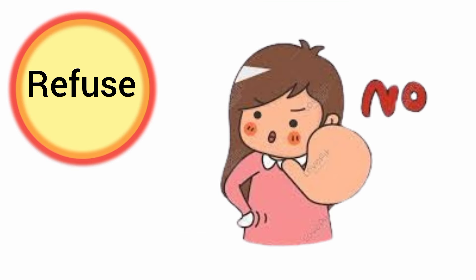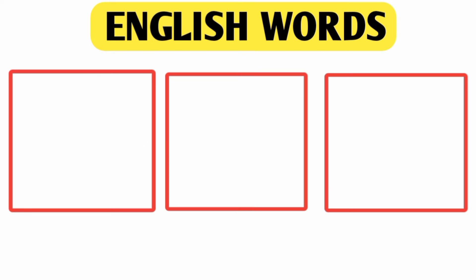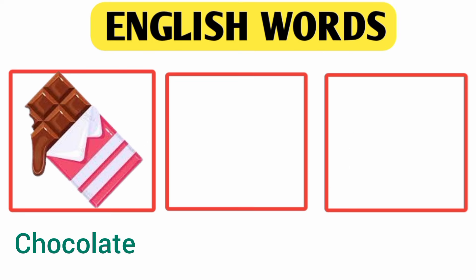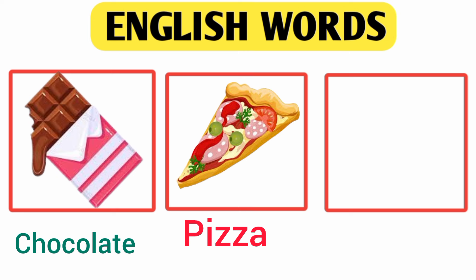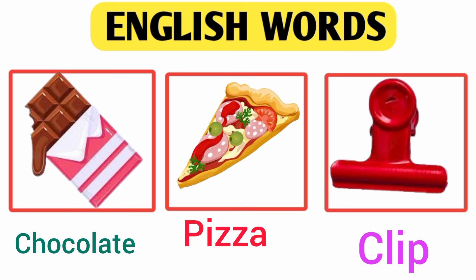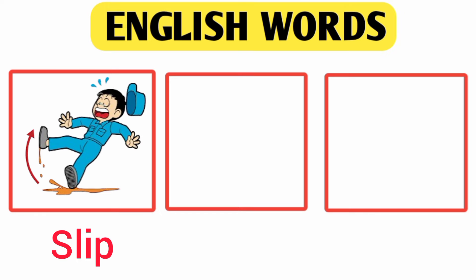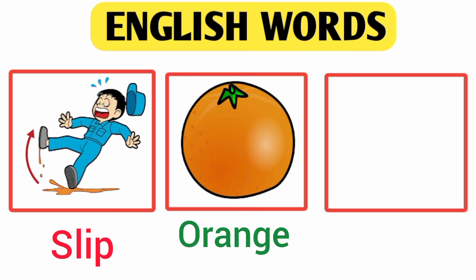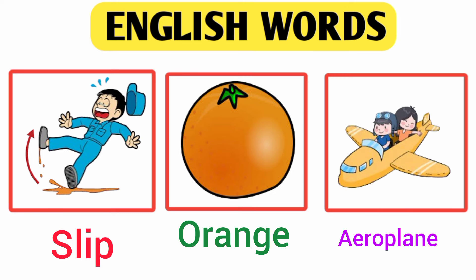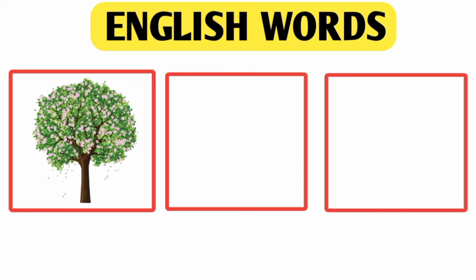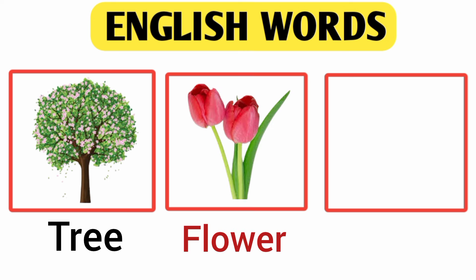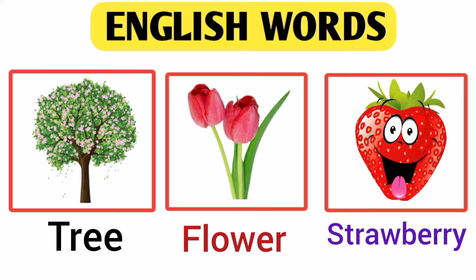Refuse means no. Next, chocolate. Pizza and sleep. Next word is slip. Slip. Orange. And aeroplane. Tree. Flower and strawberry. Strawberry.